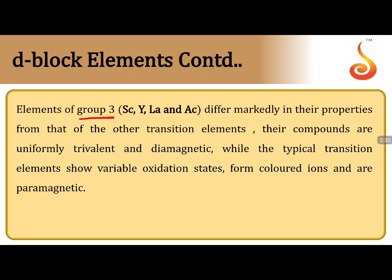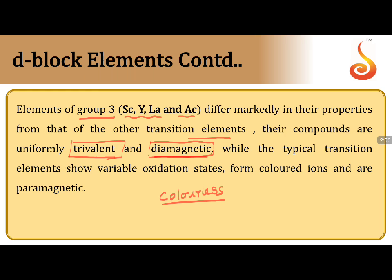The elements of group 3 — scandium, yttrium, lanthanum, and actinium — differ markedly from other transition elements. Their compounds are uniformly trivalent and diamagnetic. They are colorless; they don't exhibit any color. So Sc³⁺, Y³⁺, La³⁺, Ac³⁺ are colorless, diamagnetic and trivalent — a very important point to note, contrasting with typical transition elements.